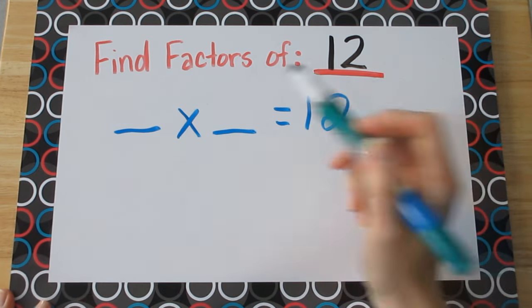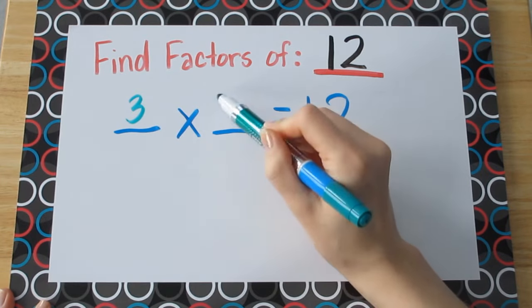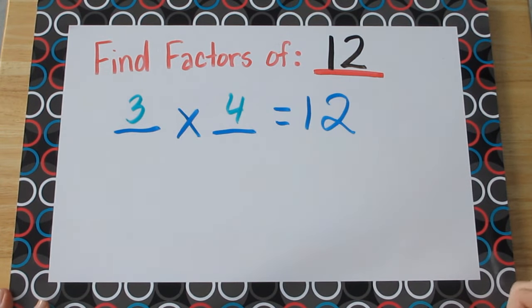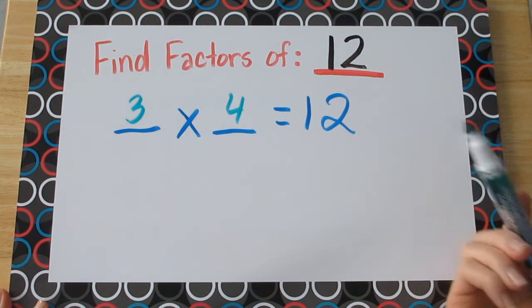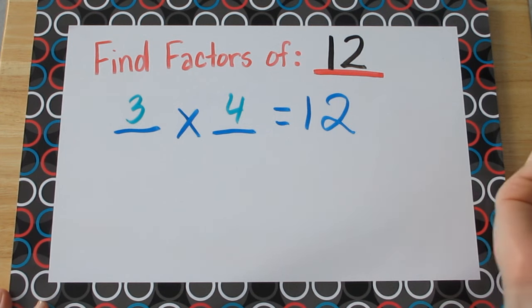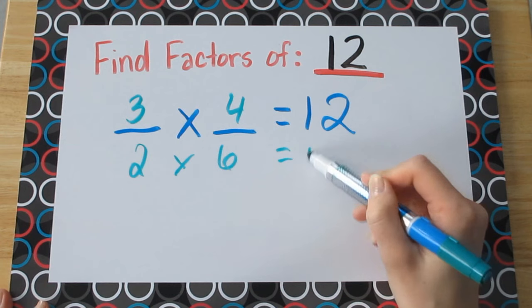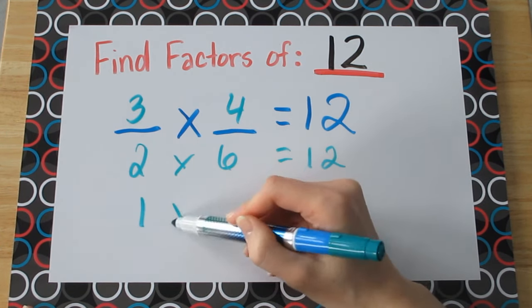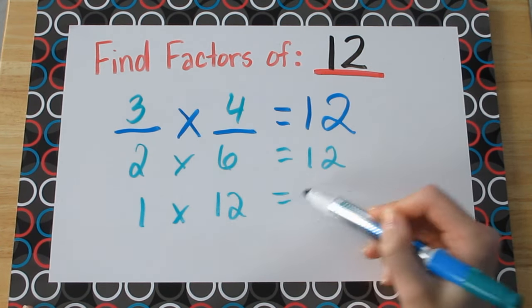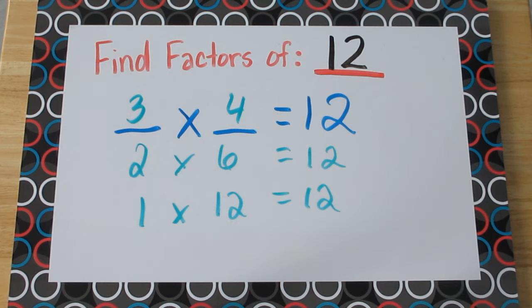So let's think. We know that 3 and 4 can be multiplied together to give you 12. Therefore, 3 and 4 are factors of 12. Can we think of any more? Sure. How about 2 and 6? Those work as well. And we also can't forget about 1 and 12. They seem like easy answers, but a lot of people forget about them and they'll be important later on.